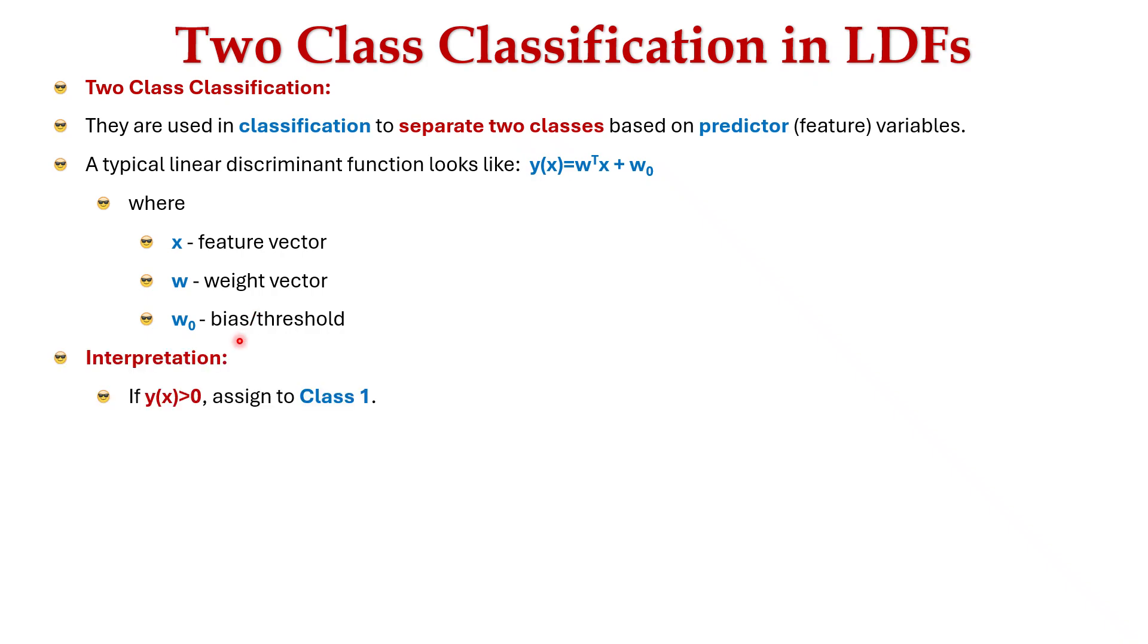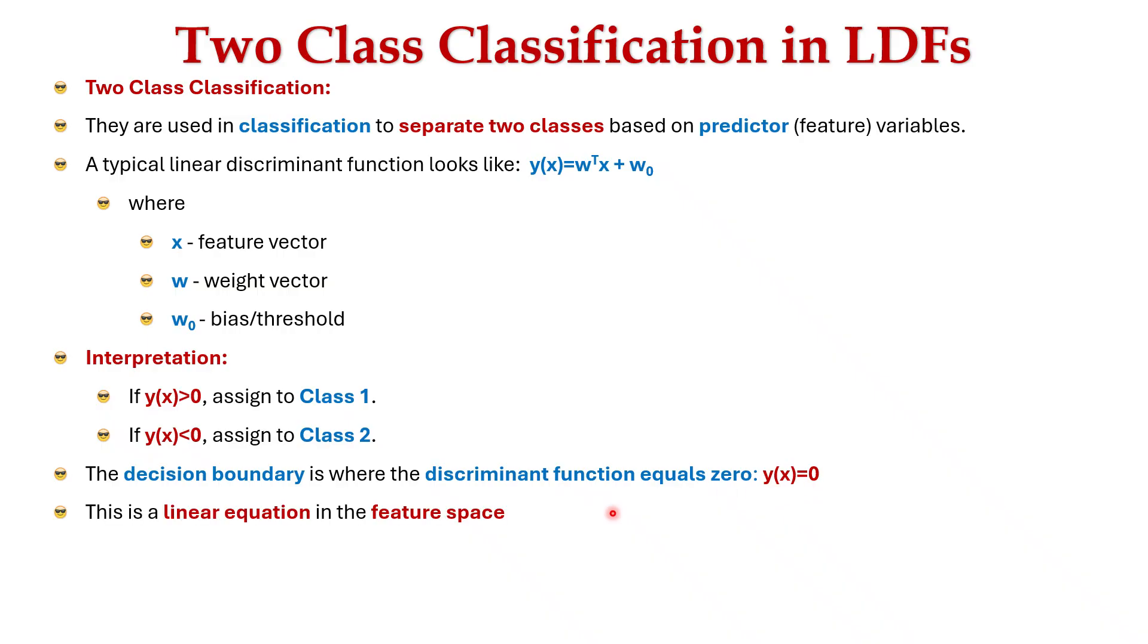It is interpreted as: if y(x) > 0, assign to class 1; if y(x) < 0, assign to class 2. The decision boundary is where the discriminant function equals 0, that is y(x) = 0. This is the linear equation in feature space.